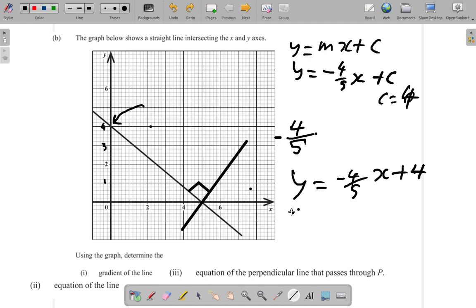So the original line gradient negative 4/5 times the gradient of the new line—let's call it G—is equal to negative 1.